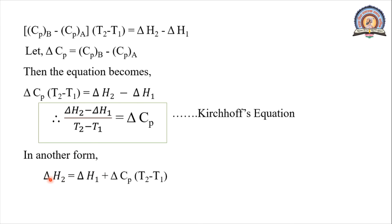Another form of Kirchhoff's Equation is obtained by rearranging: ΔH2 = ΔH1 + ΔCp·(T2 − T1). This form is used while solving numericals. The application of Kirchhoff's Law is: if we know the value of enthalpy of reaction at a particular temperature, we can find the enthalpy of reaction at different temperatures. We can also find the value of heat capacity using this law.